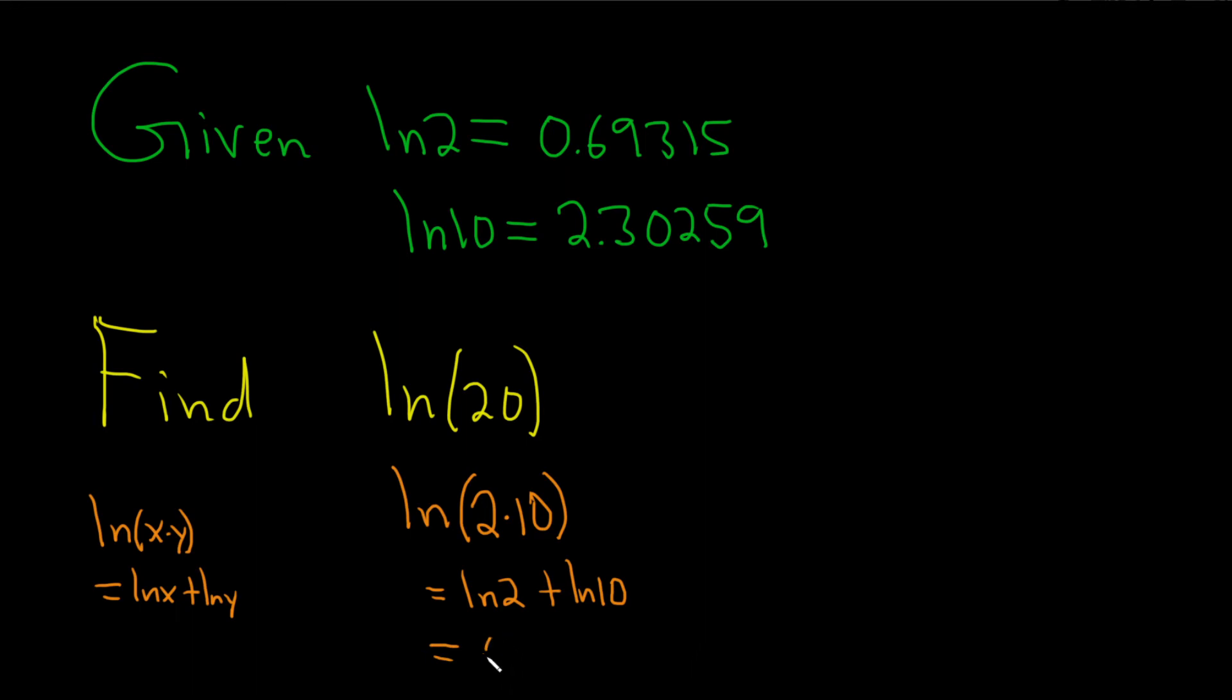The natural log of 2 is 0.69315. These are approximations. Plus, they tell us the natural log of 10 is 2.30259. I'm going to put this in my calculator very carefully to see what we get.